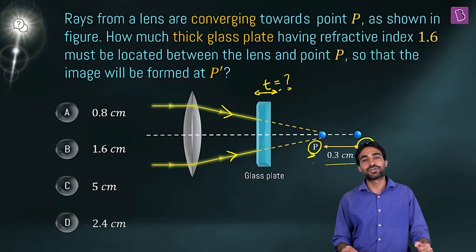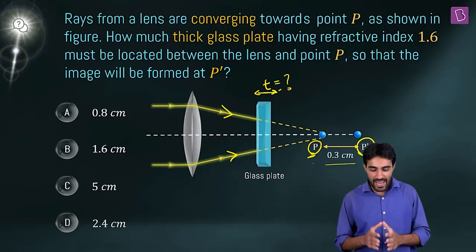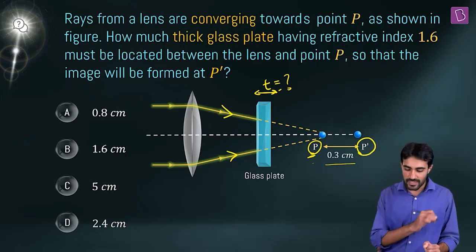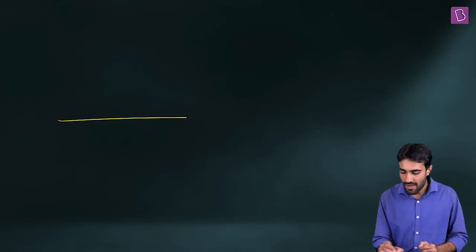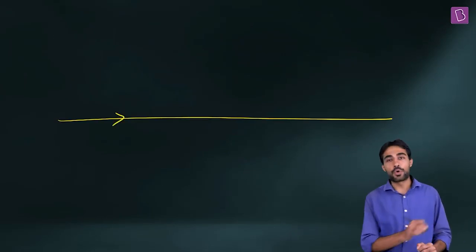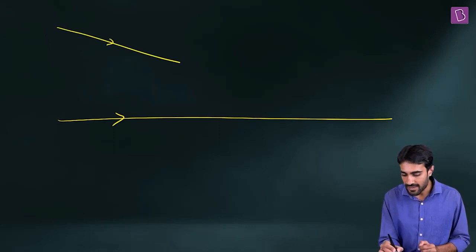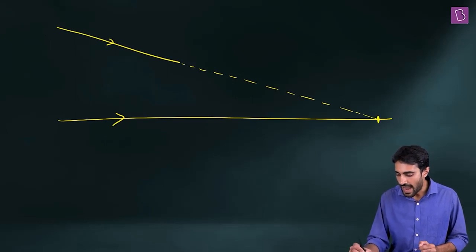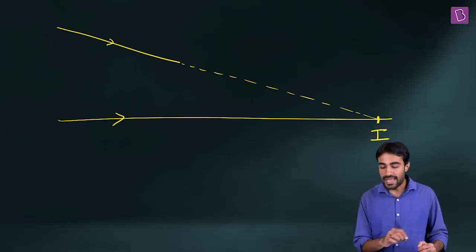The image is now formed at a new point P', and the distance between P and P' is given to be 0.3 cm. So we want to shift the image by 0.3 cm — what must be the thickness of our glass slab? Let's understand why there is a shift in the image. Suppose we have two rays going at some angle; they seem to meet at a point which we call the image I.